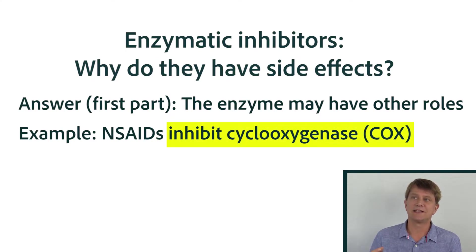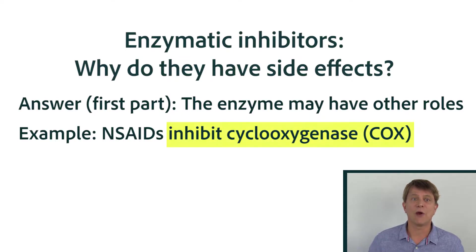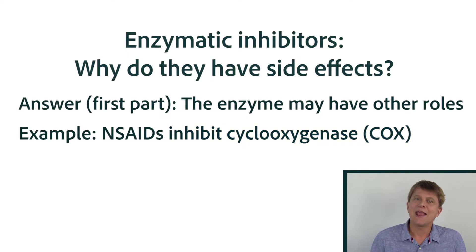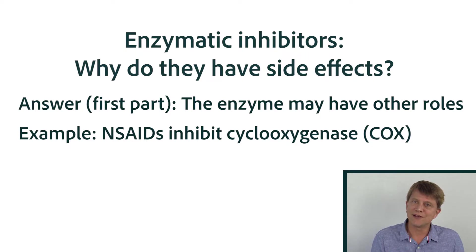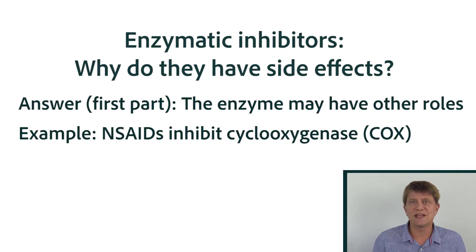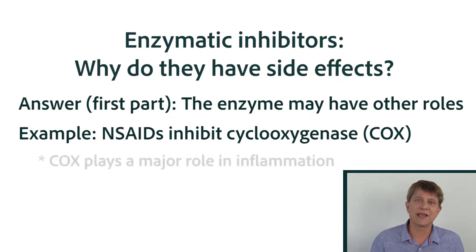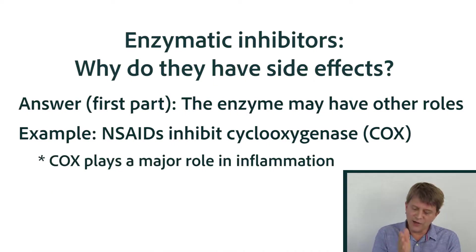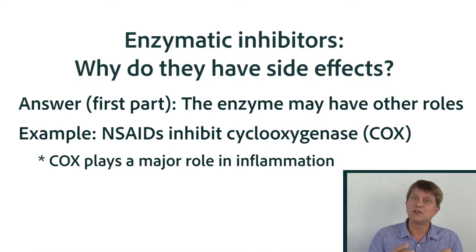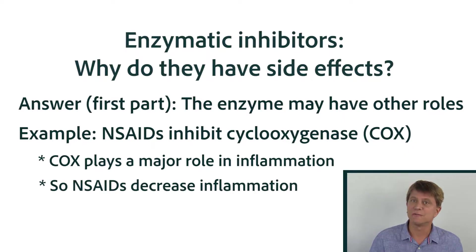Cyclooxygenase is an enzyme abbreviated as COX. COX is used in the inflammatory cascade, and if we can block that enzyme, then we're going to decrease inflammation.